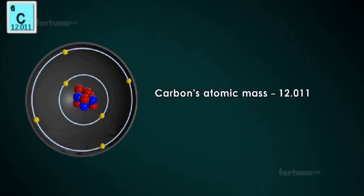Carbon's atomic mass is 12.011, which we can round off to an even 12, giving us the mass number. We already know that carbon has six protons, meaning the remaining particles will be neutrons.